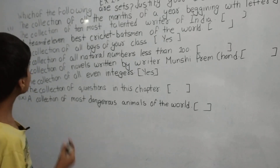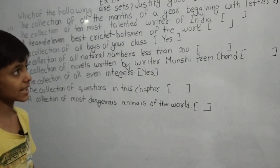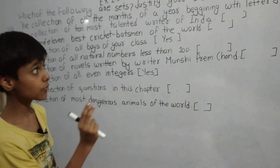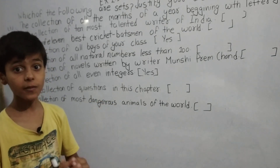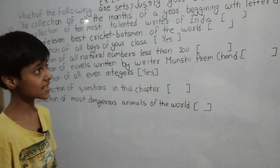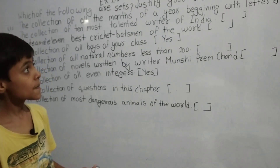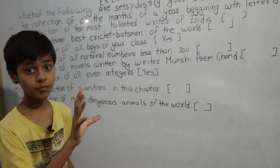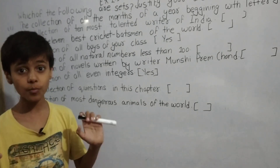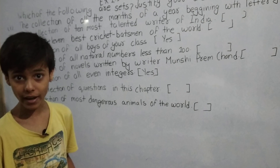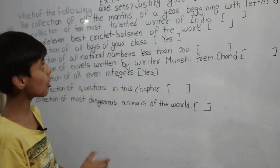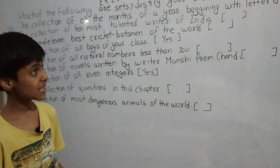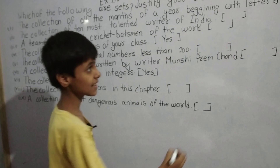Part (i): The collection of all months of a year beginning with the letter J. We need to find all months whose first letter is J — that gives us January, June, and July. These are well defined and do not vary from person to person. If you ask me or anyone else, we will give the same answer.